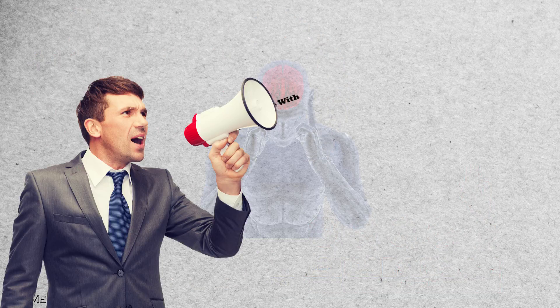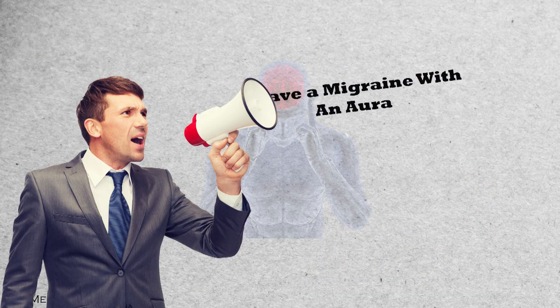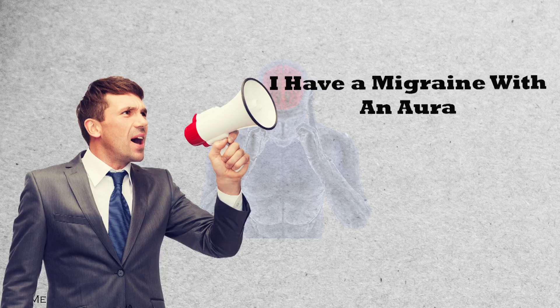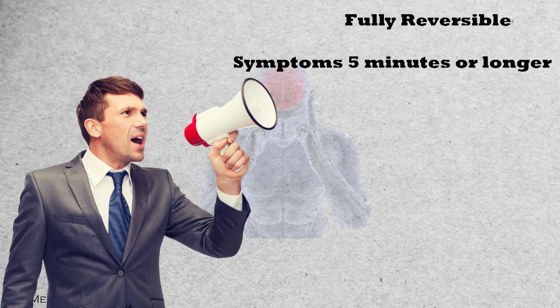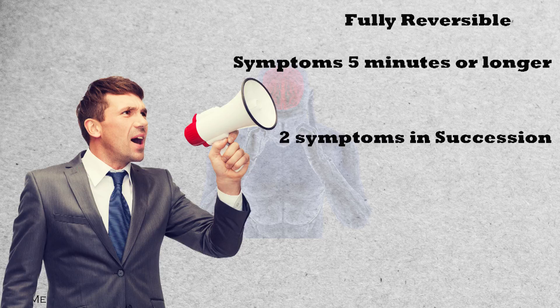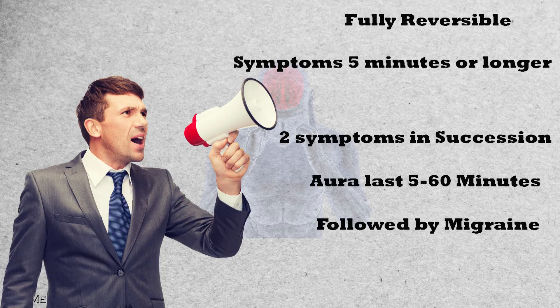To say you have migraines with an aura, the aura itself has to meet some benchmarks. It must be fully reversible. At least one aura symptom gradually spreads over five minutes or longer, or you have two or more symptoms that occur in succession. Each aura must last five to sixty minutes and be accompanied by a migraine within the hour, although some studies have suggested that this time be extended to days.